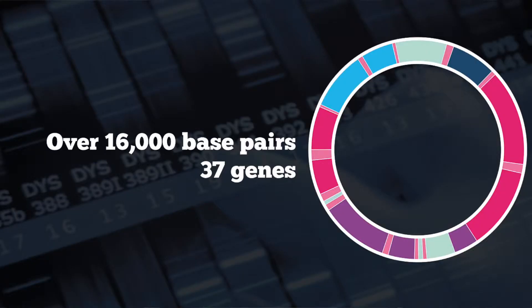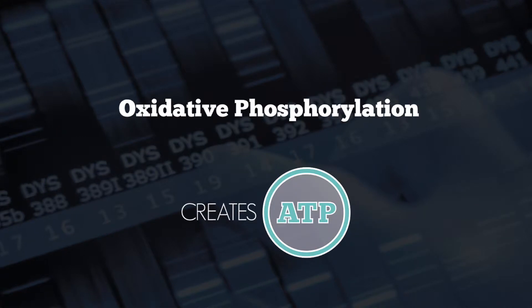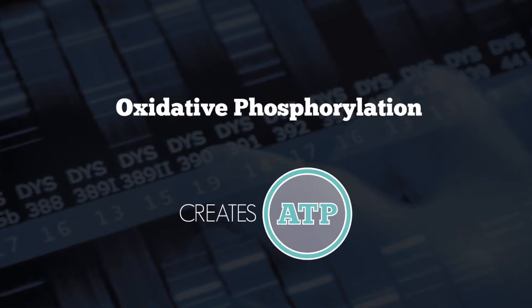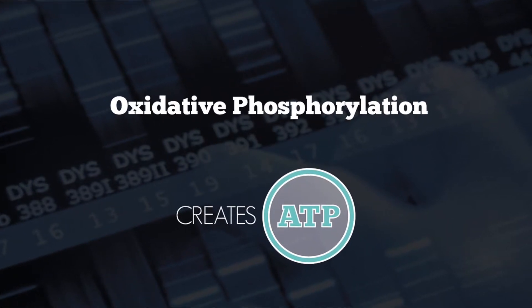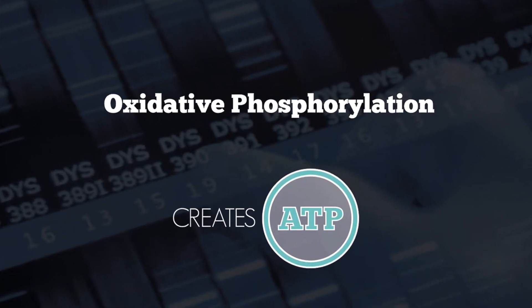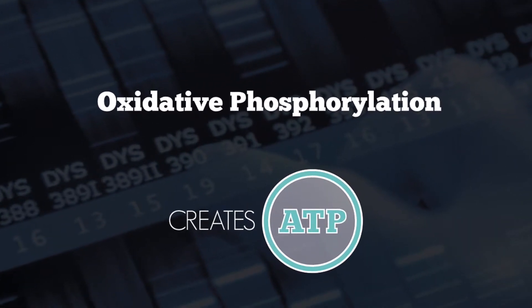These genes generally provide instructions for making enzymes which are involved in oxidative phosphorylation. This is the process of using oxygen and simple sugars to create the cell's main energy source, which is adenosine triphosphate.